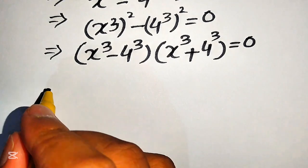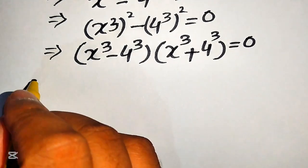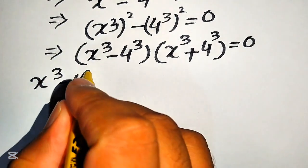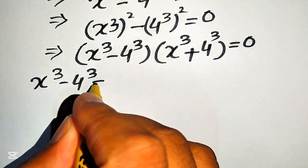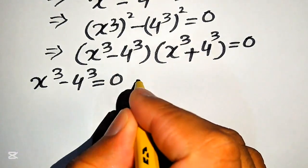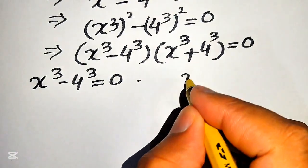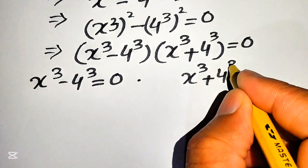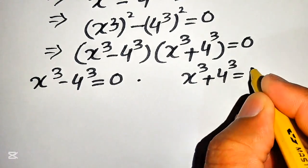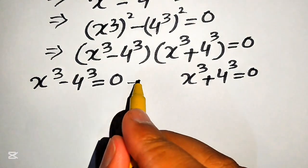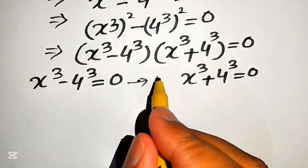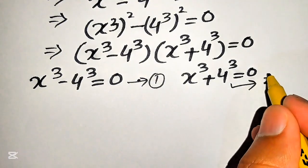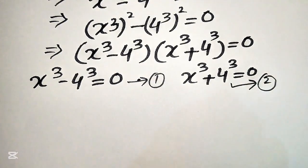Now we divide this equation into two cases. The first case is x cubed minus 4 cubed equals to 0, which we call equation number 1. The second case is x cubed plus 4 cubed equals to 0, which we call equation number 2.